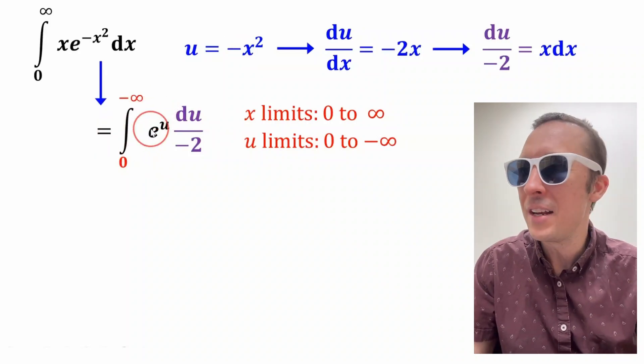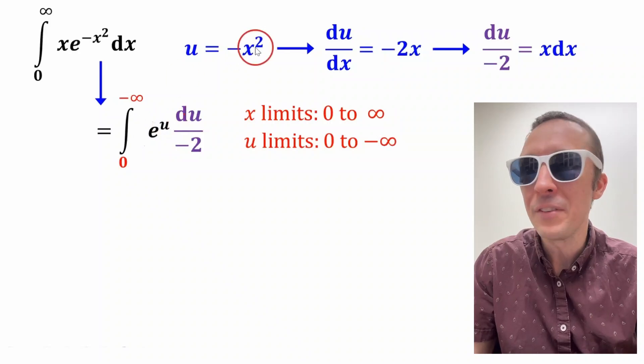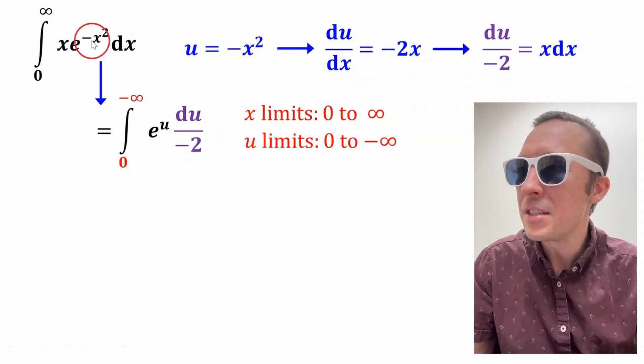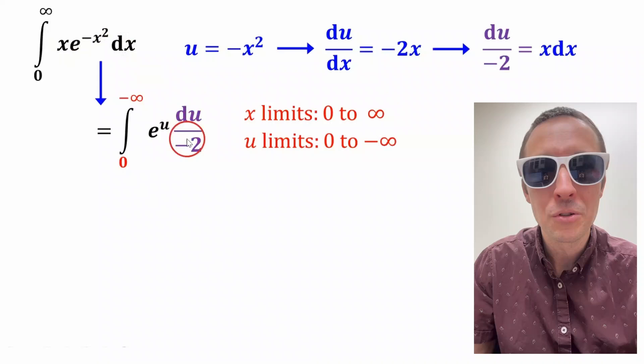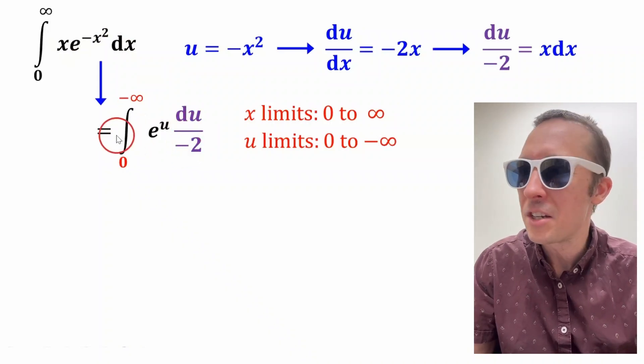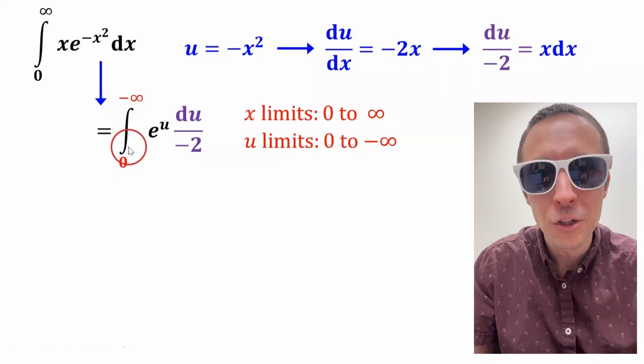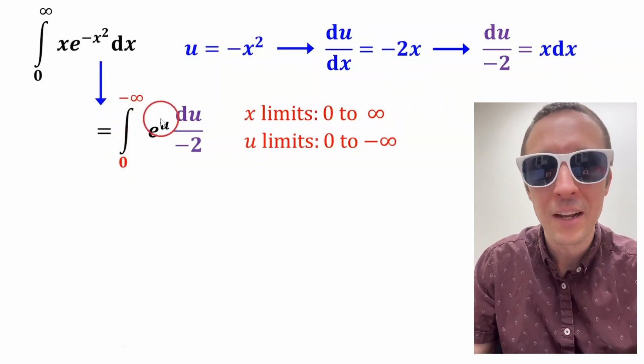So if we substitute all of that in, our integral becomes the integral of e to the u because negative x squared is u. So that's awesome. And this x dx stuff is just du over negative 2 evaluated from zero to negative infinity.